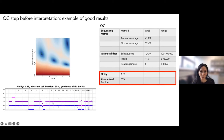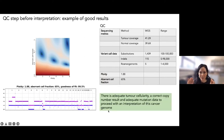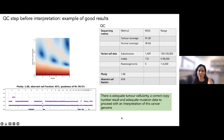This is a really nice example of a clean cancer genome. At this stage we're just QC-ing: adequate tumor cellularity, correct copy number result, adequate mutation data to proceed with interpretation. In my team, we color the box green — it's a traffic light system — meaning we think the rest of this genome can be interpreted and the drivers and signatures can be read with confidence.